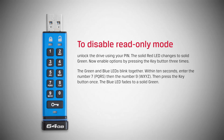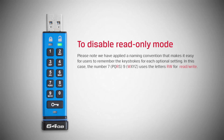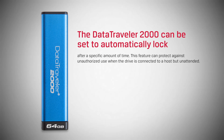Now, within ten seconds, enter the number seven, then the number nine. And then press the key button once. The blue LED fades to a solid green. We've applied a naming convention that makes it easy for users to remember the keystrokes for each optional setting. In this case, the number seven and nine uses the letters RW for rewrite.